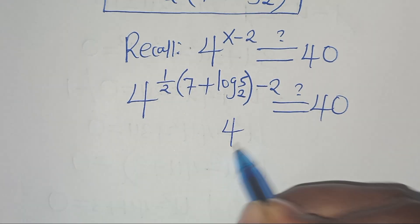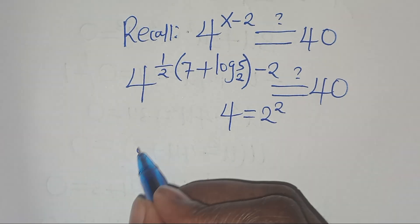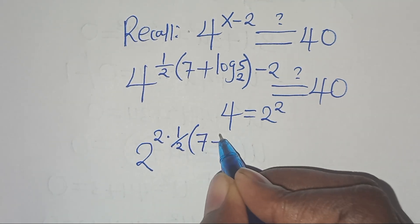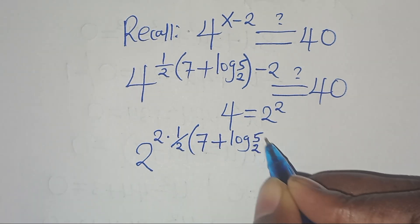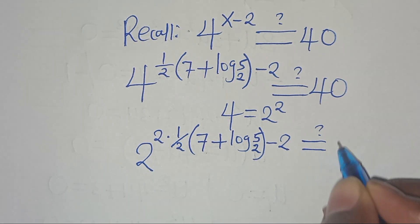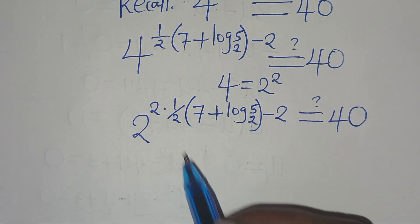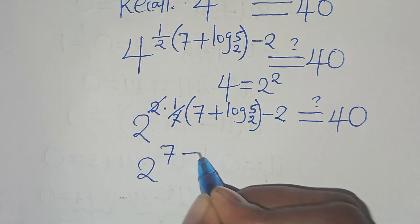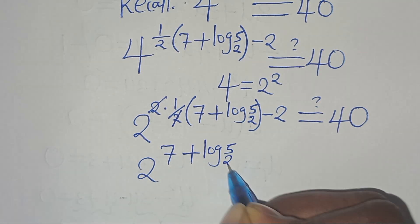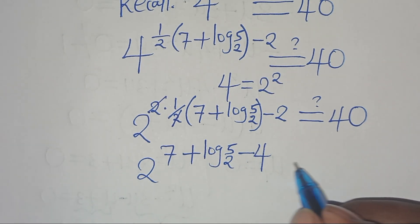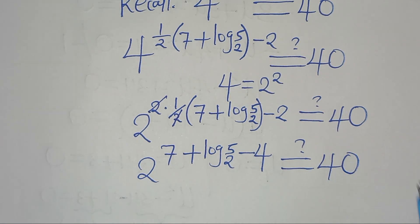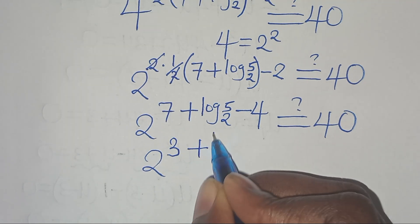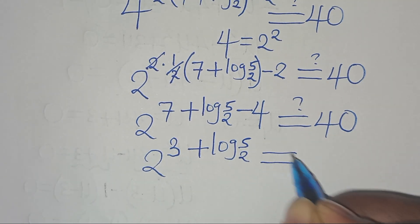We can express 4 as 2^2. So we have 2^2 multiplied by one-half times (7 + log₂5), then subtract 2, which should equal 40. Simplifying the exponent, we get 2 to the power of (7 + log₂5), minus 2 times 2 which is 4, supposed to give 40.